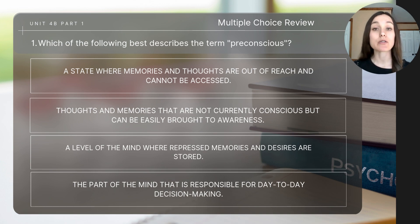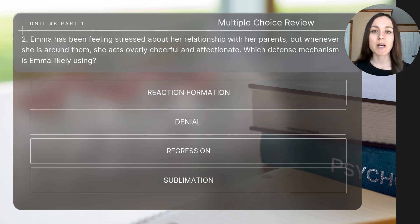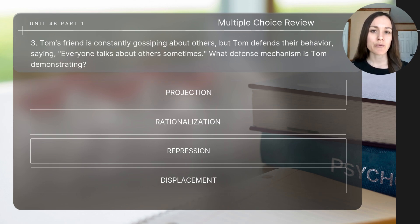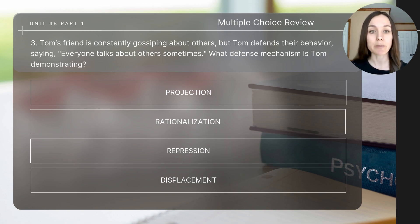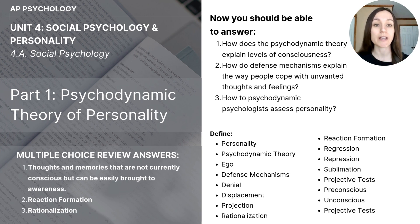This brings us to the end of today's video. Let's do a few short review questions — pause the video to determine each answer. Question one: Which of the following best describes the term pre-conscious? Question two: Emma has been feeling stressed about her relationship with her parents, but whenever she is around them, she acts overly cheerful and affectionate — which defense mechanism is Emma likely using? Question three: Tom's friend is constantly gossiping about others, but Tom defends their behavior saying 'everyone talks about others sometimes' — what defense mechanism is Tom demonstrating? On the left side of the screen you can check your answers, and on the right you can review the most important takeaways from today's video.